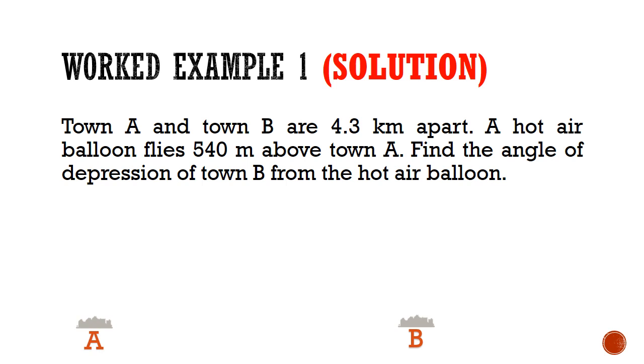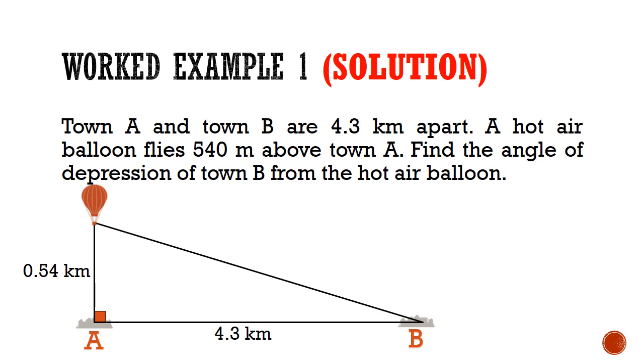Now a good way to solve problems is to have a diagram. We have Town A, Town B, and we have a balloon. We can form a right-angled triangle between these three points. Next, we can label the distances. AB is 4.3 km, and the height of the balloon is 0.54 km. Notice that I've converted the units to km to make it easier to deal with.